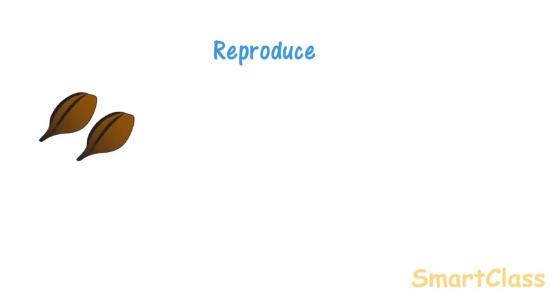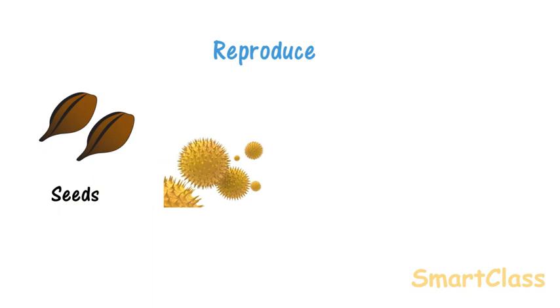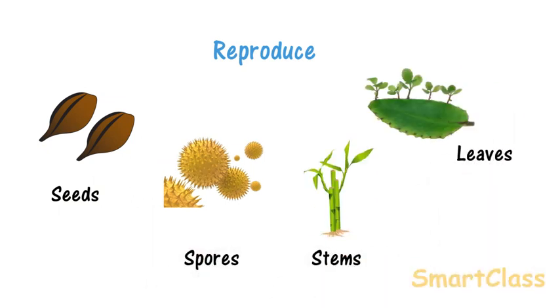Flowering plants reproduce from seeds. Ferns, mushrooms reproduce from spores. While some plants reproduce from leaves, stems and roots.